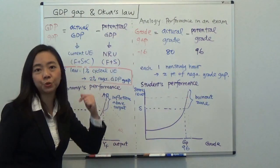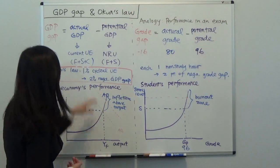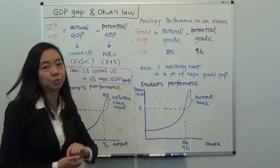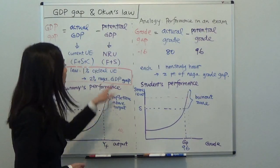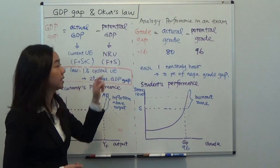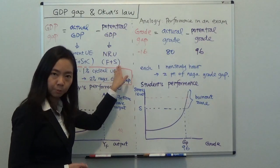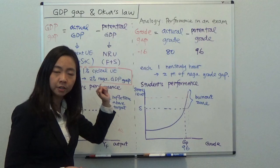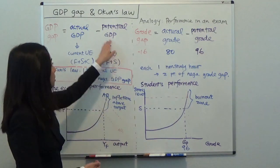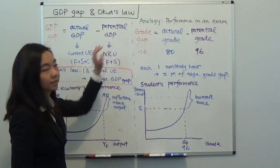Now going back to our economy: GDP gap by definition is equal to actual GDP minus potential GDP. Potential GDP is the GDP corresponding to the natural rate of unemployment, which includes frictional unemployment and structural unemployment. Notice that there is no cyclical unemployment here, meaning no workers are unemployed due to a recession, so the economy is already operating at its potential.